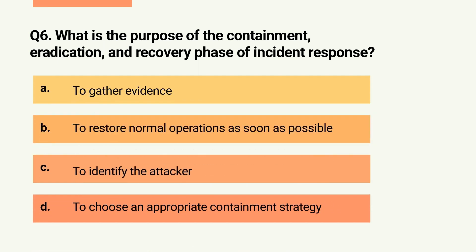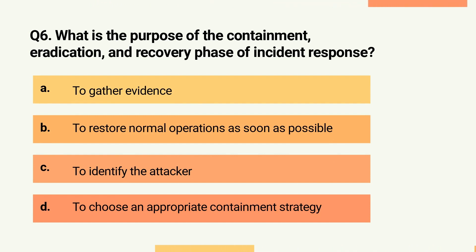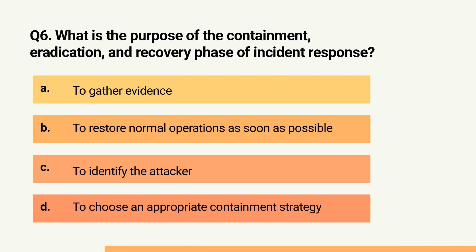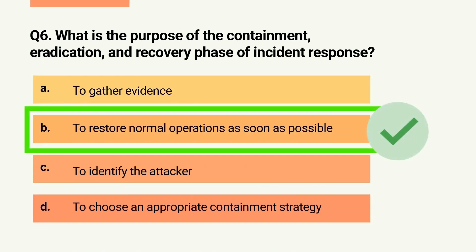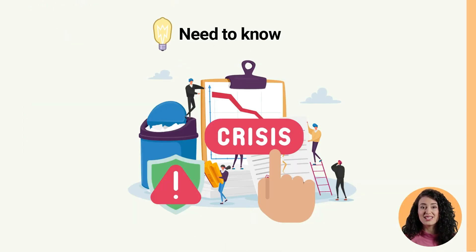Question 6. What is the purpose of the containment, eradication, and recovery phase of incident response? A. To gather evidence. B. To restore normal operations as soon as possible. C. To identify the attacker. Or D. To choose an appropriate containment strategy. The correct answer is B: to restore normal operations as soon as possible. As per ISC2 material, the purpose of this phase is to restore normal operations as soon as possible.